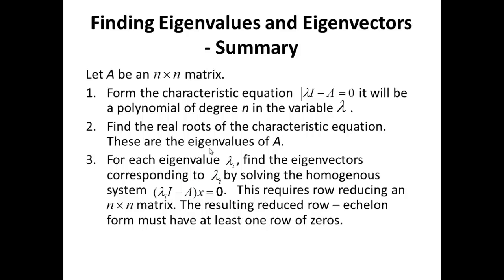Let's summarize the procedure for finding eigenvalues and eigenvectors. Start with an n by n matrix A. Form the characteristic equation. Find the real roots of the characteristic equation. For each eigenvalue Lambda_i, find eigenvectors by solving the homogeneous system (Lambda_i I minus A)x equals 0, using reduced row echelon form in Math Studio.